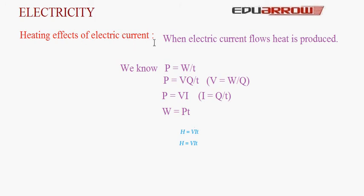We know that I = Q/T, so putting Q/T as I, we get P = VI. Work done equals power into time, and power equals VI, so the heat energy produced H = VIt. Replacing V with IR according to Ohm's law, we get H = I²RT. This concept is used in electrical heating devices like heaters and electric irons.